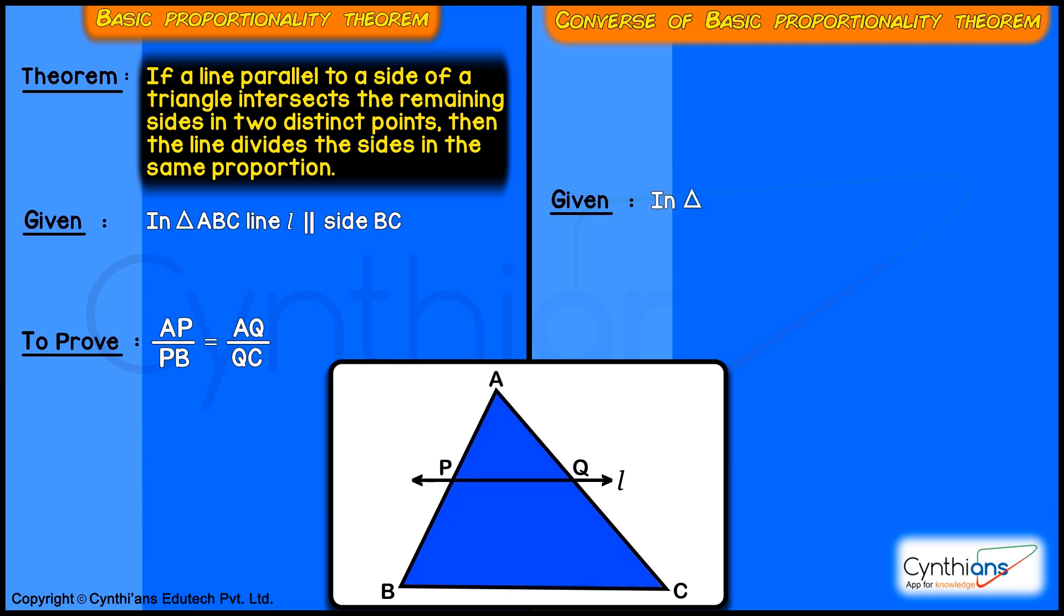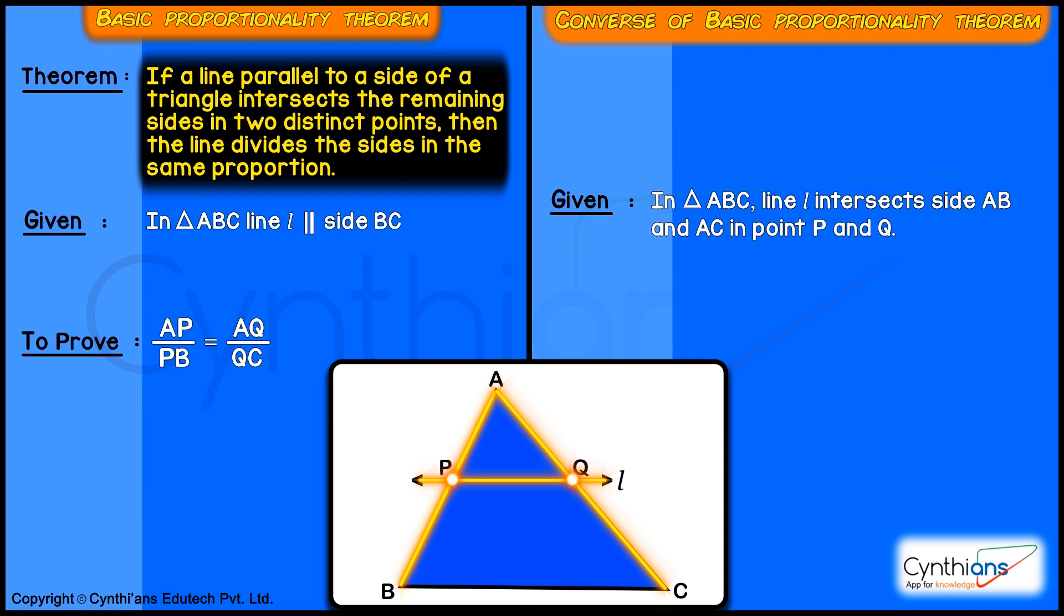the given will be: in triangle ABC, line L intersects AB and AC at two points, point P and point Q, thus making the ratios AP upon PB and AQ upon QC. These ratios are equal, and what we need to prove?